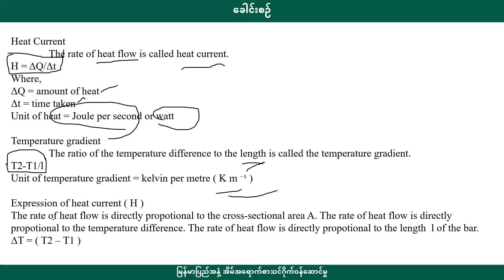The rate of heat flow is directly proportional to the cross-section area. The rate of heat flow is directly proportional to the temperature difference. The rate of heat flow is inversely proportional to the length of the bar.